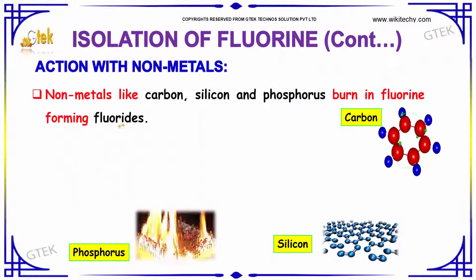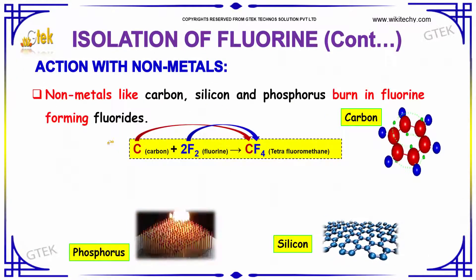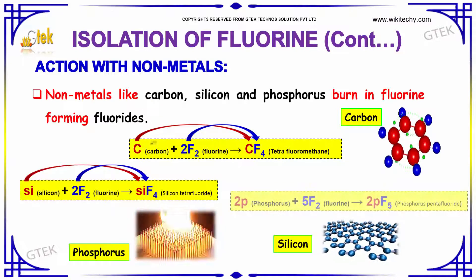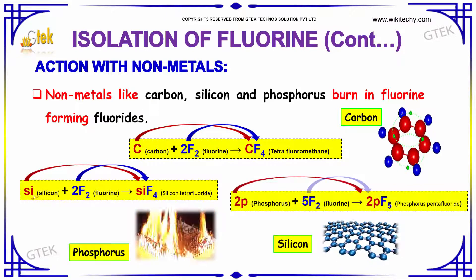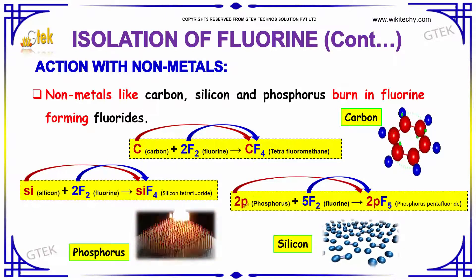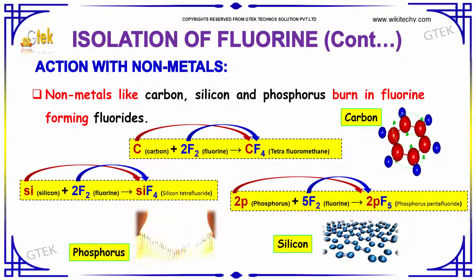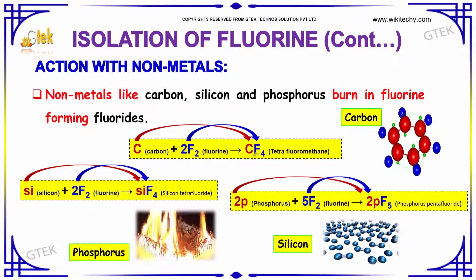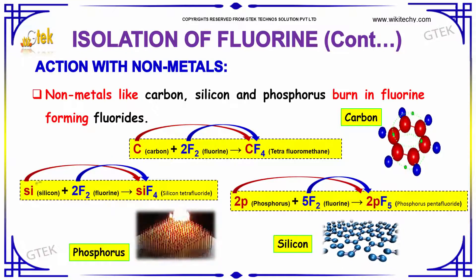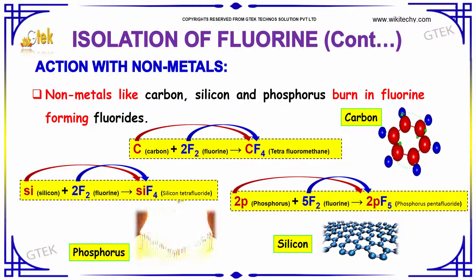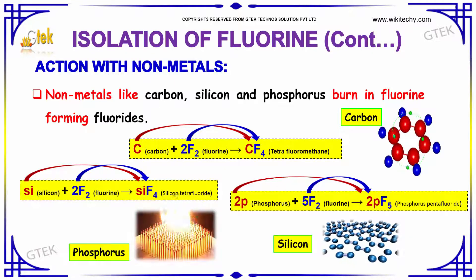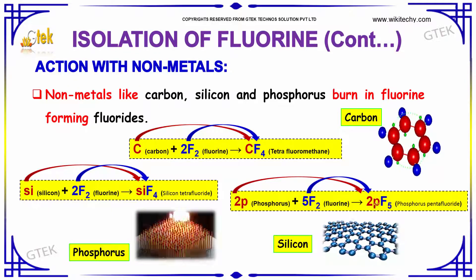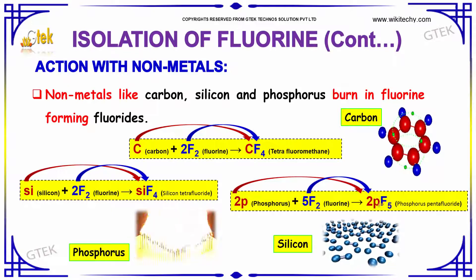Action with Non-Metals: Non-metals like Carbon, Silicon, and Phosphorus burn in Fluorine forming fluorides. Carbon with Fluorine gives Tetrafluoromethane (CF4). Silicon with Fluorine gives Silicon Tetrafluoride (SiF4). Phosphorus with Fluorine gives Phosphorus Pentafluoride (PF5).